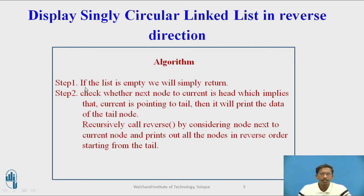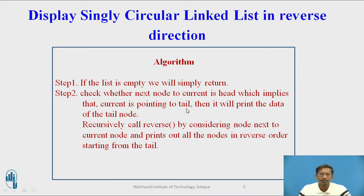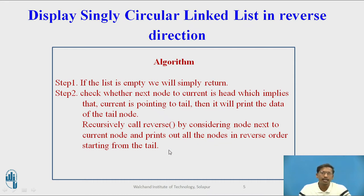First step: check whether the linked list is empty — in that case, you simply return from the function. Otherwise, check whether the next node to the current node is head or start, which implies that the current node is pointing to the last node or tail. Then you print the data and return — returning to where you called this function from. Recursively call the reverse function by considering the node next to the current node, and print every time node's data in reverse order starting from the tail.